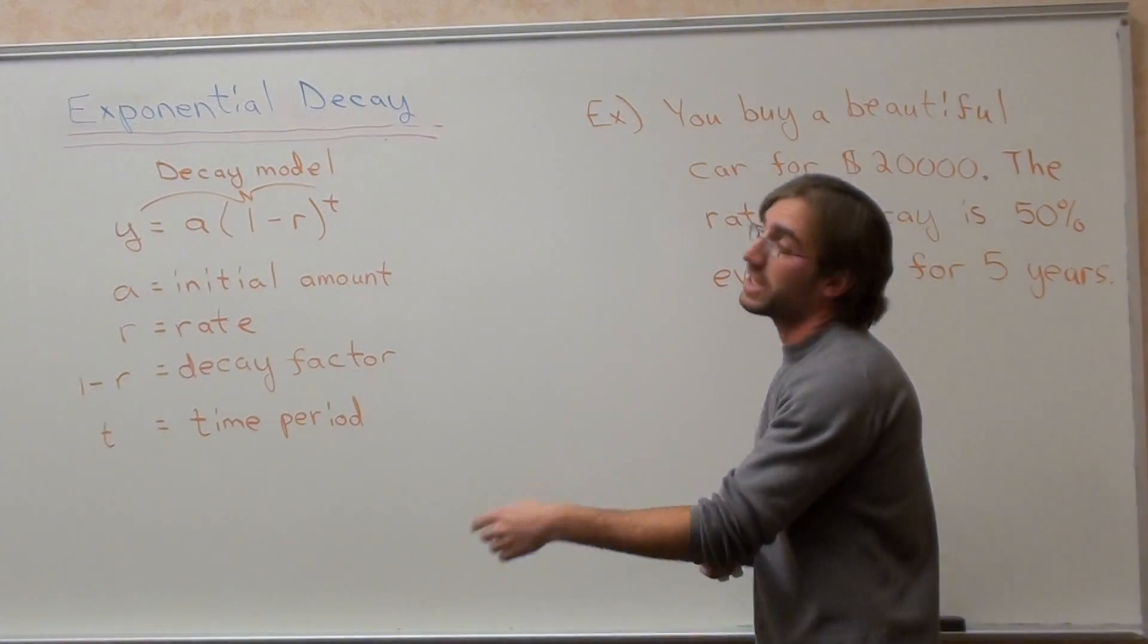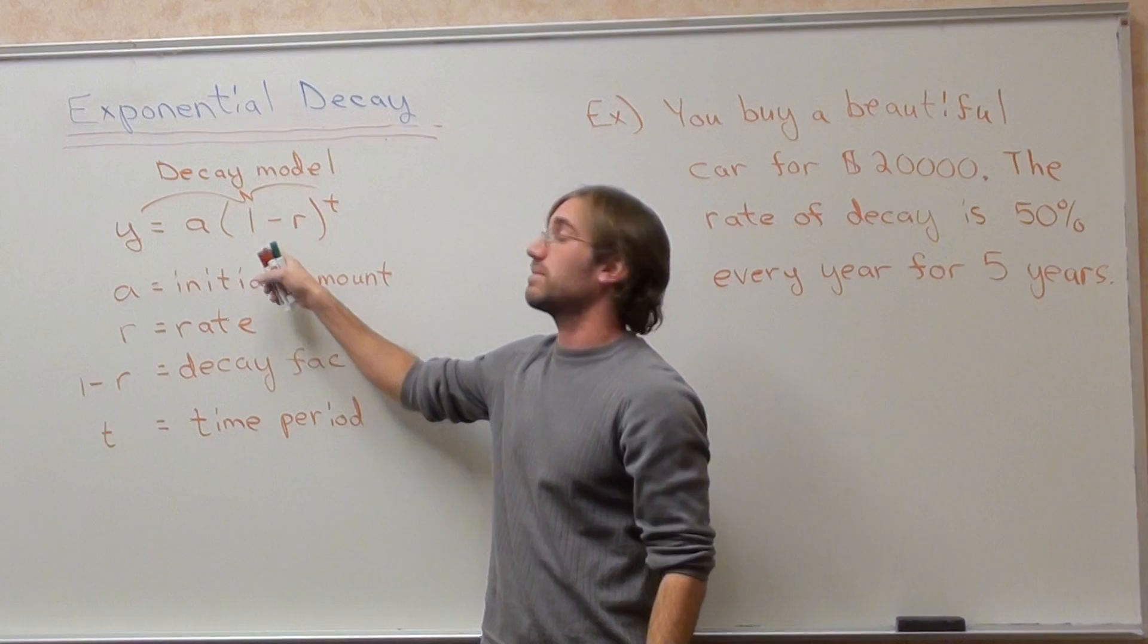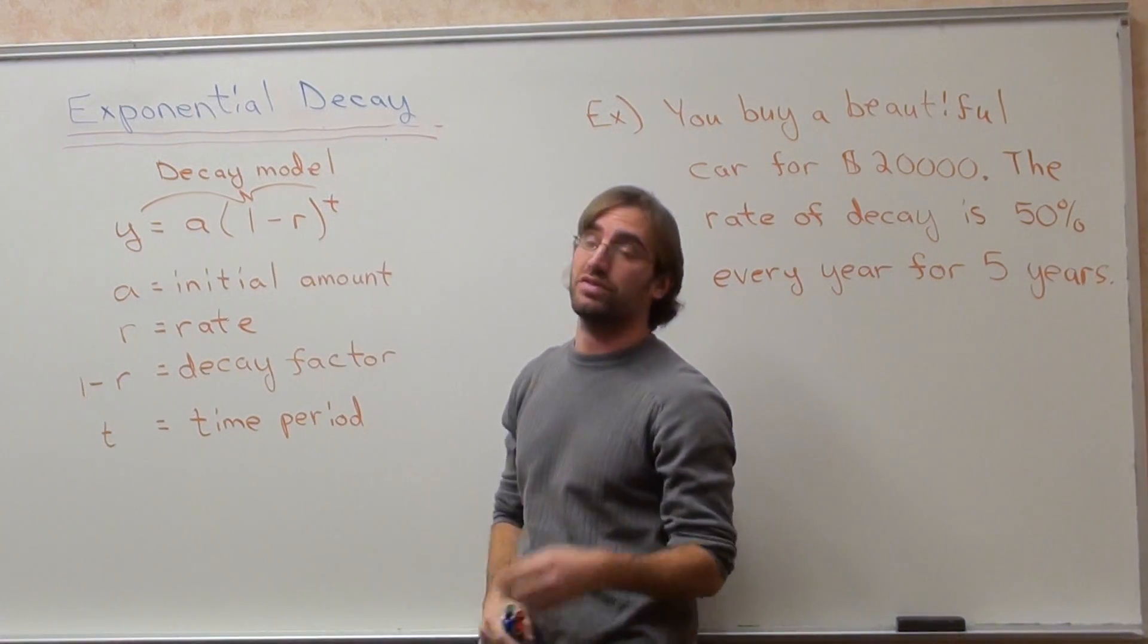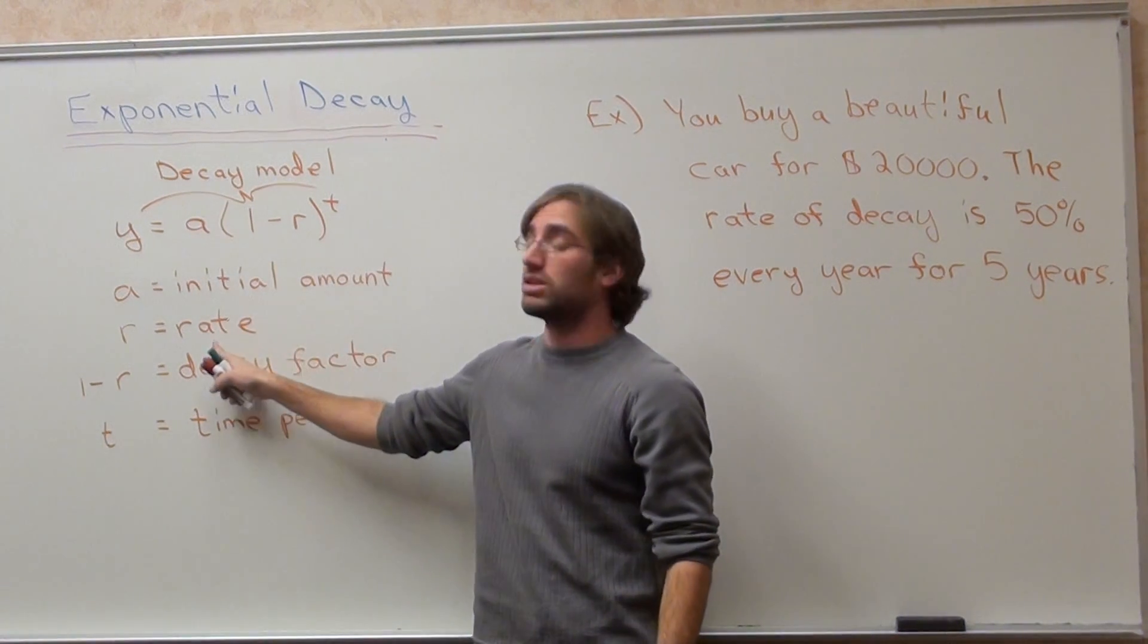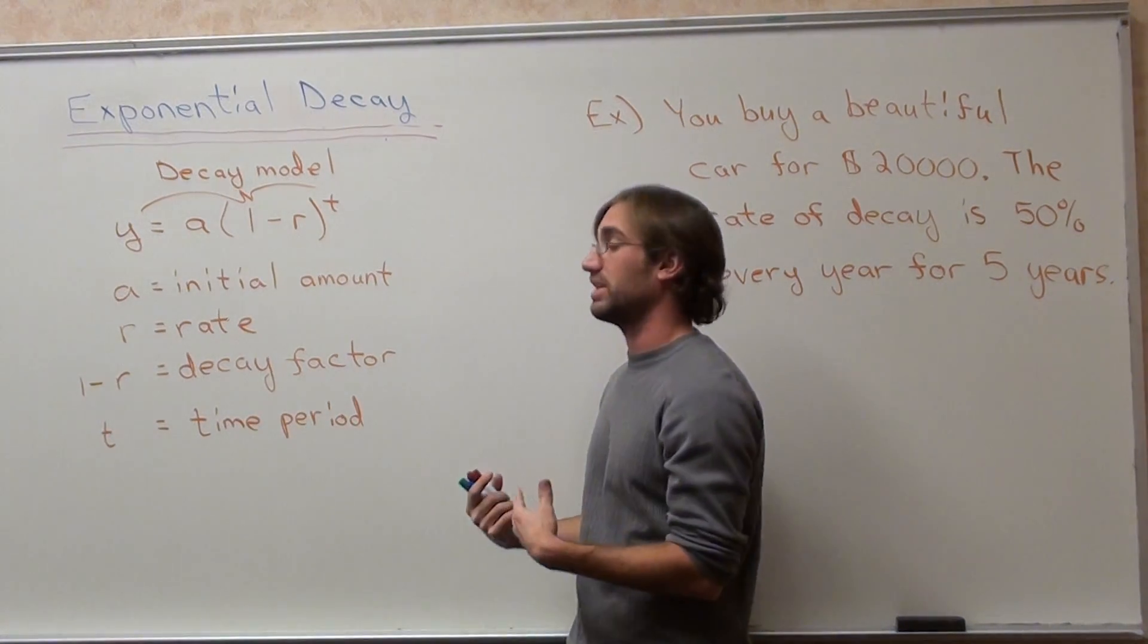Hello again. We're doing exponential decay this time, and let me just get right to it. The decay model is y equals a times the quantity 1 minus r to the power of t, where a is the initial amount, r is the rate, 1 minus r is the decay factor, and t is the time period that we're working with.